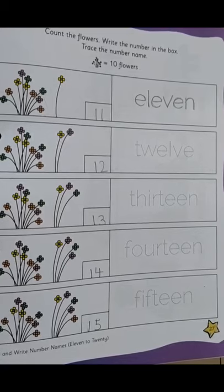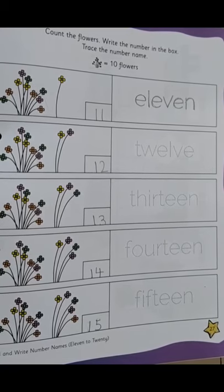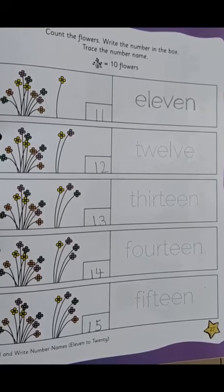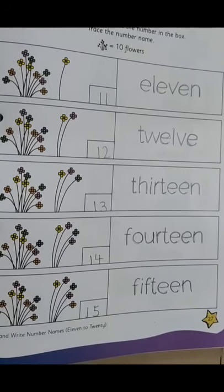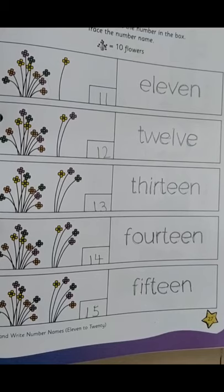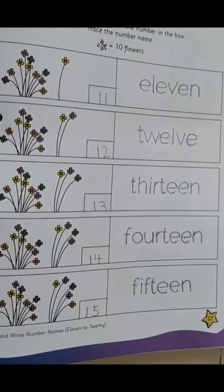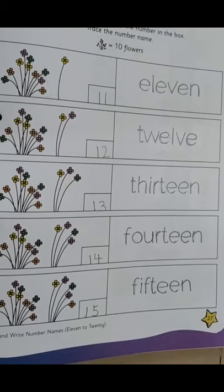Then, the last one. F, I, F, I, F, 5. T, E, N, 15. Right, children. So now you can see. In this manner, we will write all the number names. Trace it. Right, children.